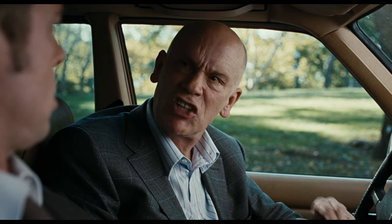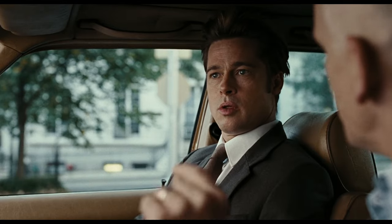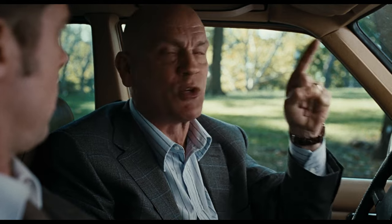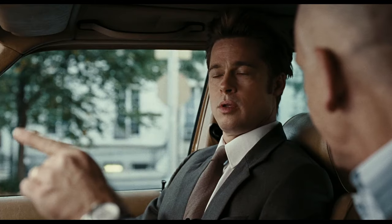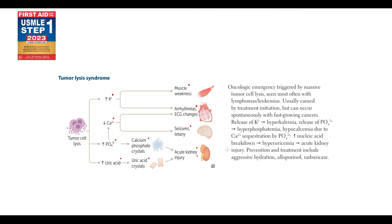Blast cells also release uric acid, which can form uric acid crystals and cause acute kidney injury. To prevent tumor lysis syndrome, patients should receive massive hydration to wash out the electrolyte imbalance, and should also be given allopurinol or rasburicase to inhibit formation of uric acid.